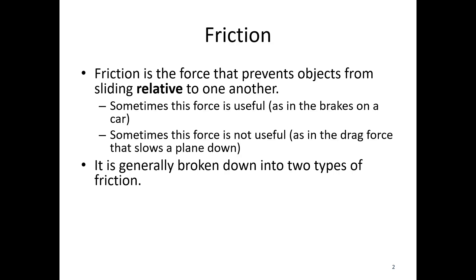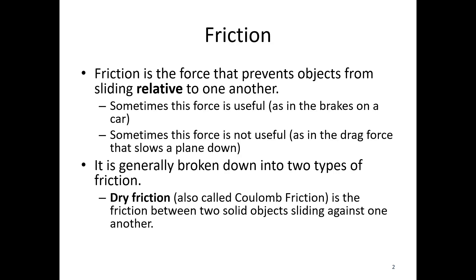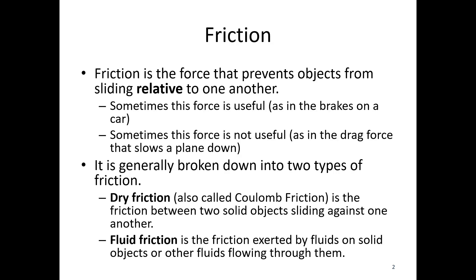Friction is generally broken down into two types. We have dry friction, also sometimes called Coulomb friction, which is the friction between two solid objects sliding relative to one another. If I have one solid object on a surface and push it along, that's dry friction. The other type is fluid friction — the friction exerted by fluids on solid objects passing through them, or by fluids flowing through other fluids. Here we focus on dry friction; fluid friction is more the domain of a fluid mechanics course.